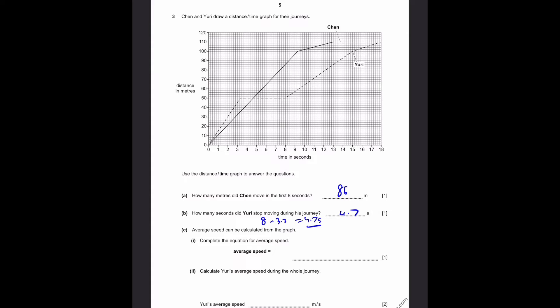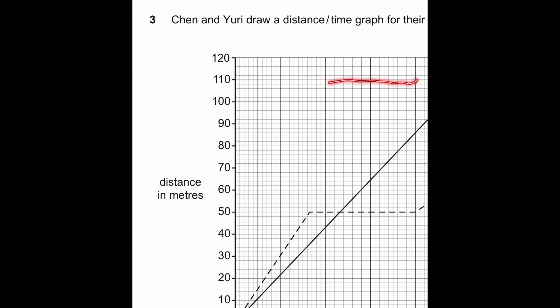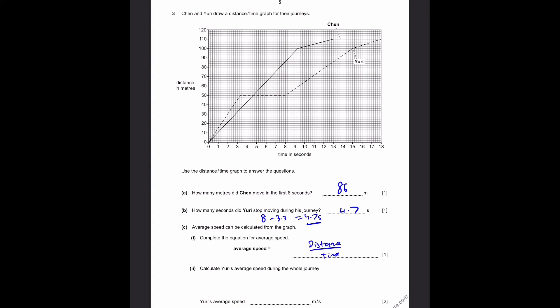Part C. Average speed can be calculated from the graph. Part 1: Complete the equation for average speed. Average speed is simply equal to distance by time. This is the formula. That's the answer. Part 2: Calculate Yuri's average speed during the whole journey. So the amount of time taken is 18 seconds, and the amount of distance traveled is, if you look closely, 110 meters. We can draw the line over there which continues to 110. Therefore, Yuri's average speed is 110 over 18, which is distance by time, which is equal to 6.11 meters per second. And this is to three significant figures. That's the answer.